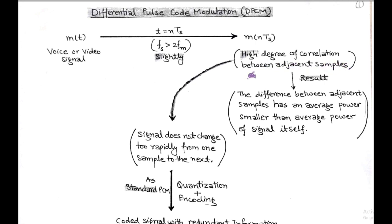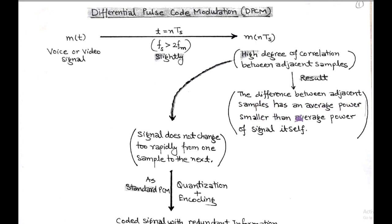Correlation here means adjacent samples do not change too rapidly from one sample to the next. Due to this high degree of correlation, the difference between adjacent samples has an average power smaller than the average power of the signal itself.